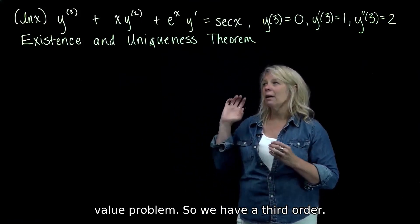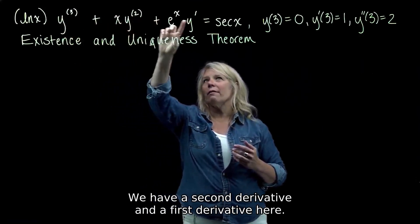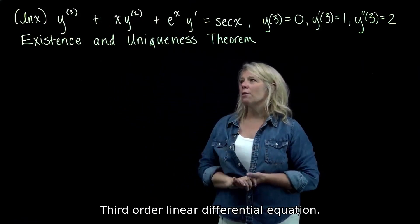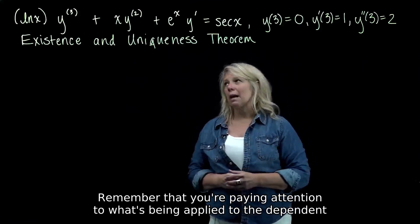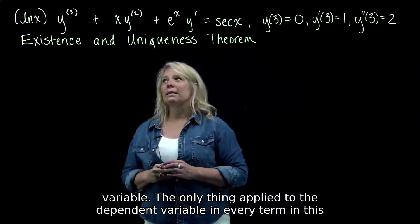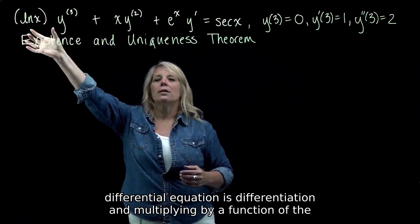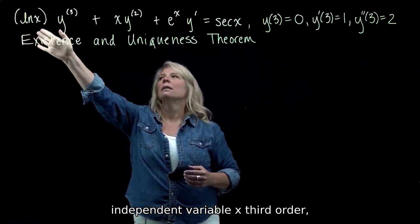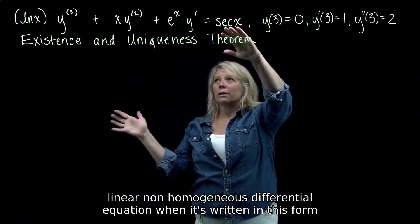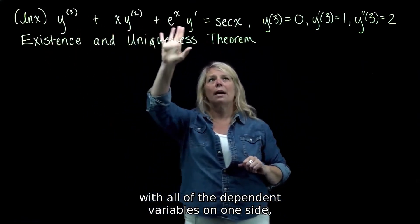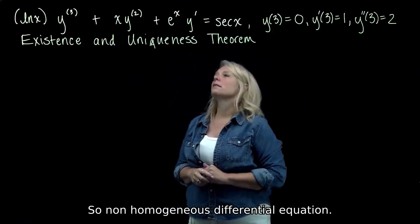So we have a third-order — this is the highest order derivative, a third derivative — we have a second derivative and a first derivative here. Third-order linear differential equation. Remember that you're paying attention to what's being applied to the dependent variable. The only thing applied to the dependent variable in every term is differentiation and multiplying by a function of the independent variable x. Third-order, linear, non-homogeneous differential equation — when written in this form with all the dependent variables on one side, you do not have the zero function on the right-hand side.